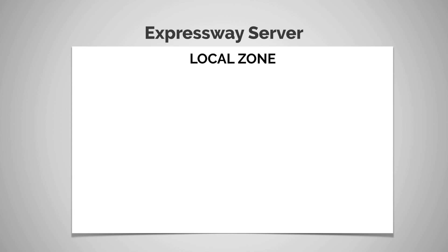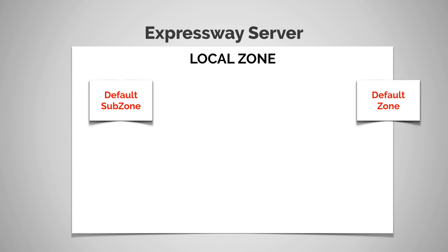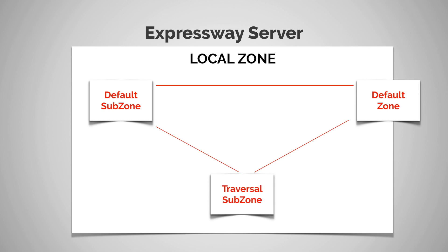Remember, these are the default components that we have out of the box with an Expressway server: we have our default subzone, default zone, and our traversal subzone, and of course the default links between them.